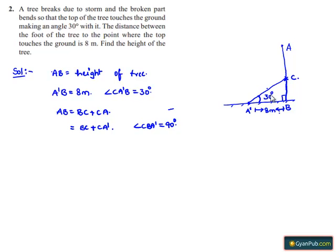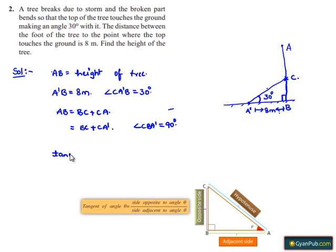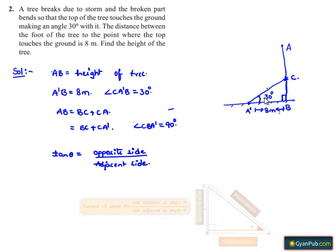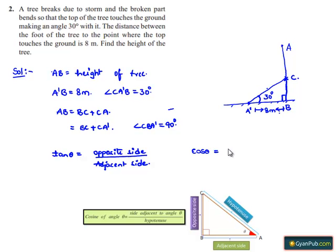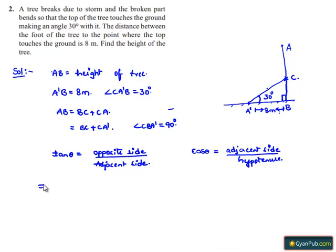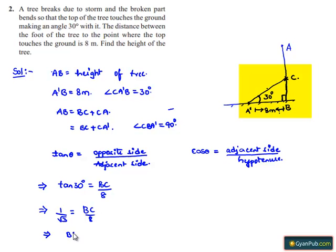To find the opposite side, we use tan theta equals opposite side by adjacent side. Here theta is 30 degrees and the adjacent side is 8 meters. So tan 30 degrees equals BC divided by A'B, that is BC divided by 8. Since tan 30 degrees equals 1 by root 3, we get 1 by root 3 equals BC by 8, which implies BC equals 8 by root 3.